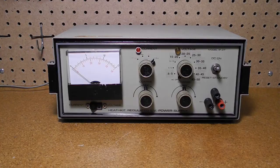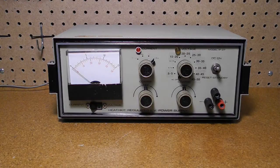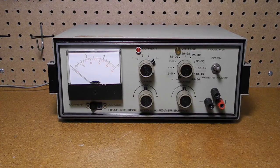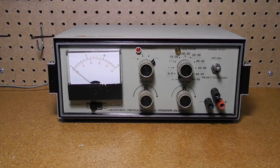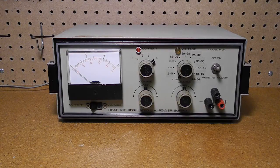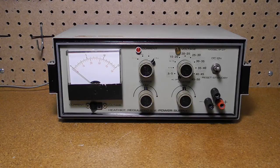The IP27 is a solid state, regulated, low voltage power supply. It produces a variable output from 0.5 to 50 volts with adjustable current limiting up to 1.5 amps.